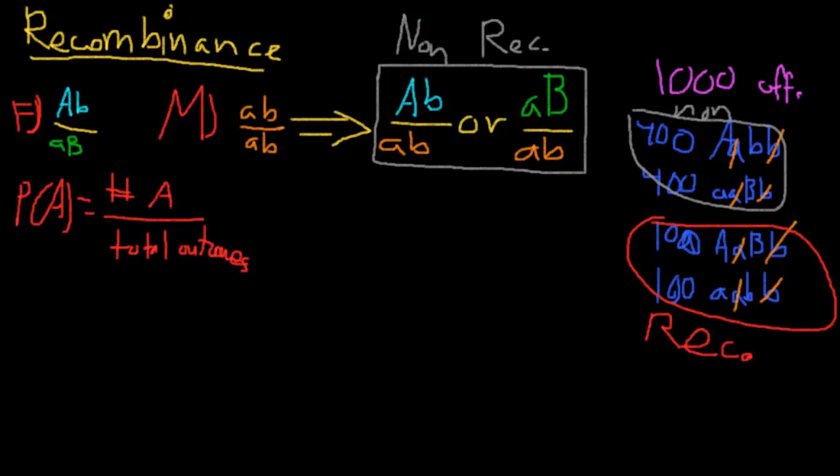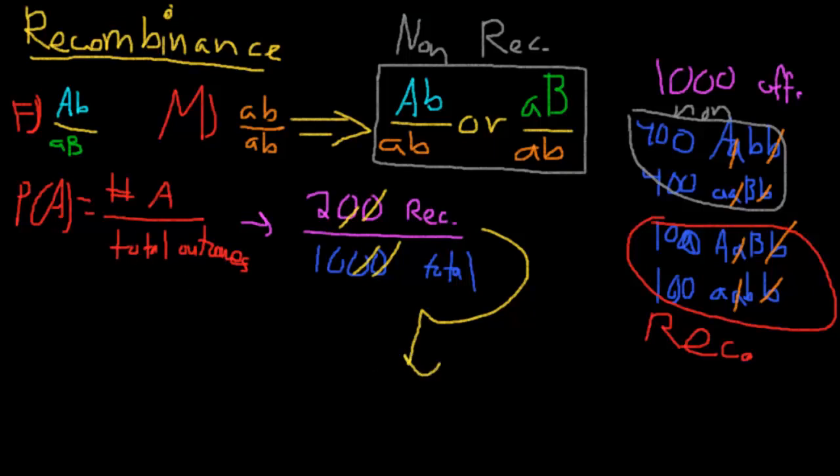So that means we have 200 recombinant divided by this 1000 total. So then, doing basic algebra, 2 over 10 equals, so that means we have 1 fifth as our recombination frequency.